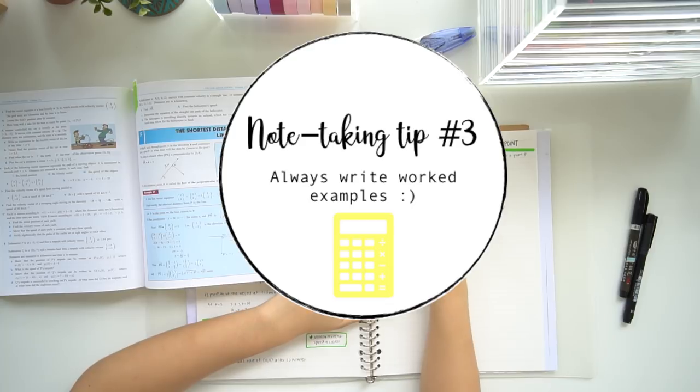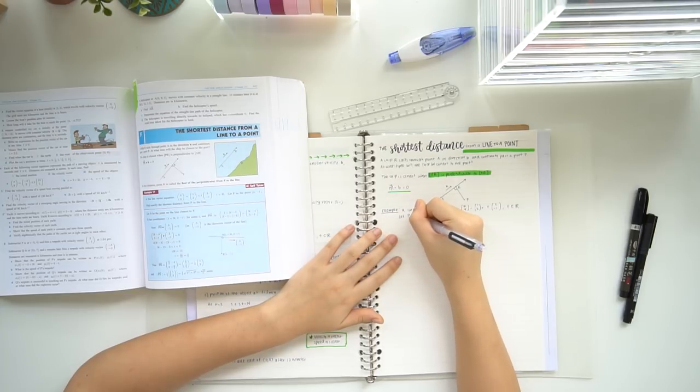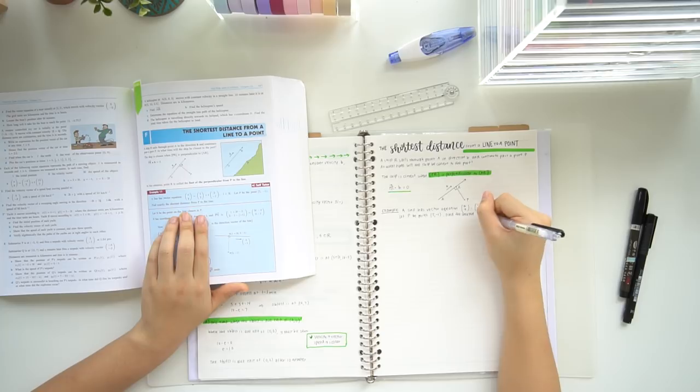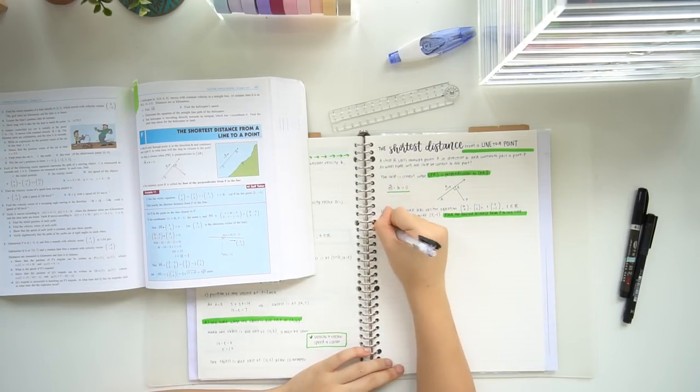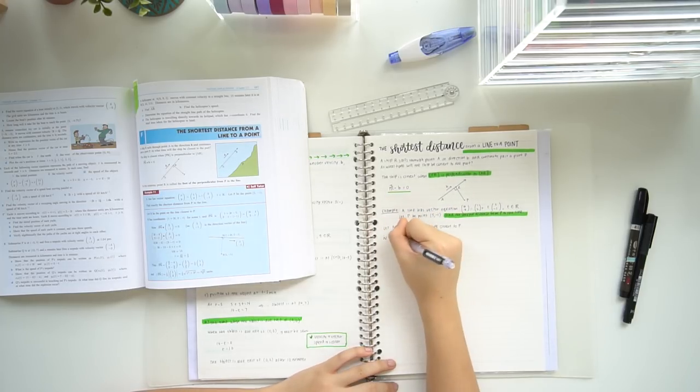For subjects like maths, it's always good to write down a full worked example in your notes. This is just so when you come back to review them later on, they make more sense, because having just formulas and sentences might not make a whole lot of sense in terms of how to use them properly. So if you have a full step-by-step of how to do a certain type of question, you're also more likely to remember the information when you come back to revise.